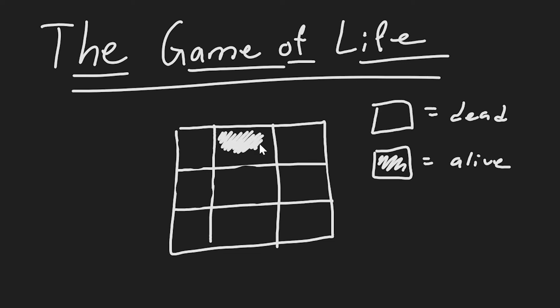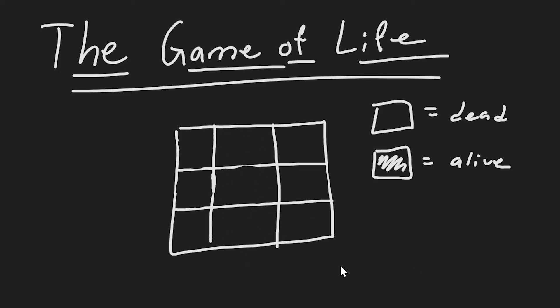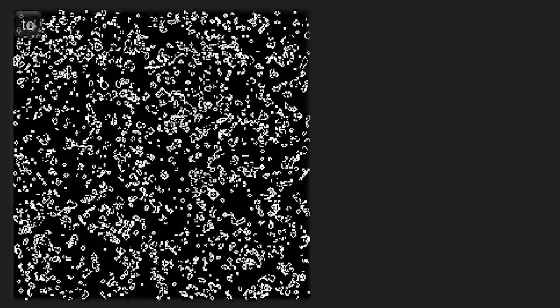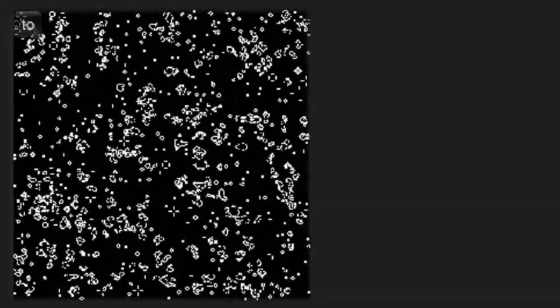In the Game of Life, each pixel gets checked with its neighboring pixels. If a pixel is alive and it has fewer than two living neighbors or more than three living neighbors, it dies. If a dead pixel has exactly three living neighbors, it will be revived. On a 256x256 screen, it looks like this. And this is what it looks like set to a 1920x1080 screen at full speed.